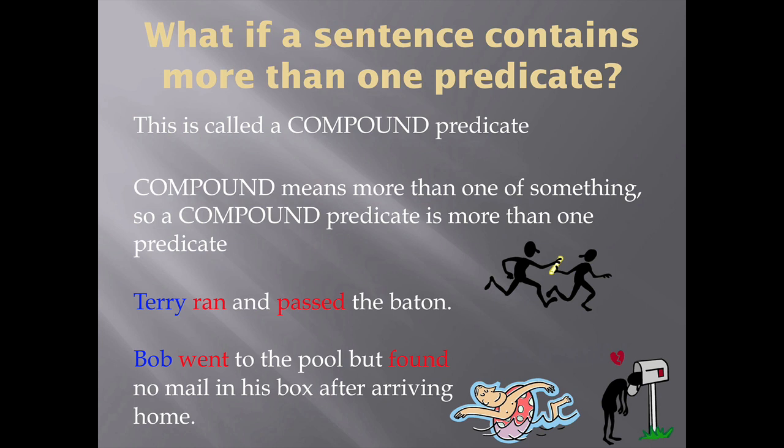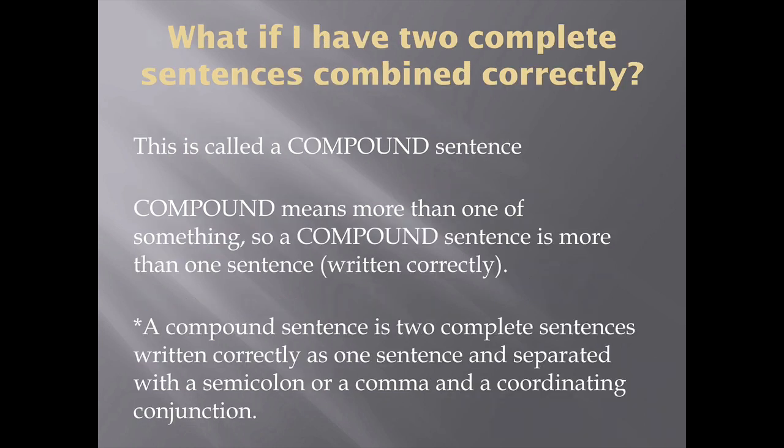Now we have Bob. Bob's kind of pathetic. Bob went to the pool but found no mail in his box after returning home. Sad. So here we have Bob — one guy doing two things. He went to the pool, but he found no mail in his box when he arrived home. One guy doing two things means that you have a compound predicate.